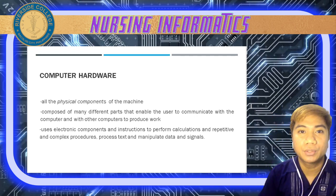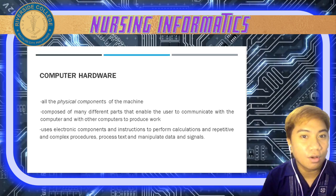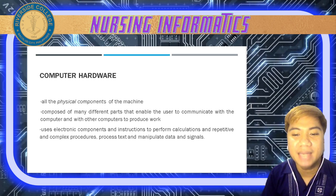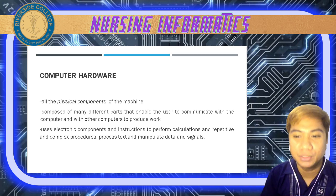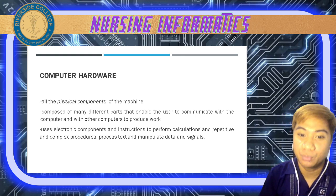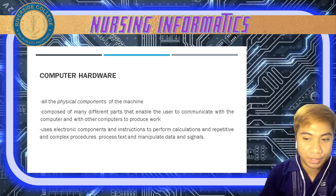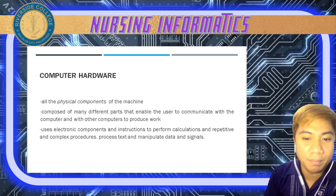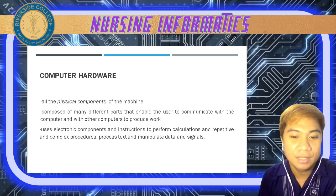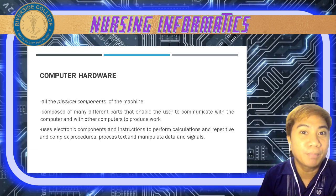When we talk about computer hardware, it is the physical components of a specific machine. It is composed of many different parts that enable the user to communicate with the computer and with other computers to produce work. It uses electronic components and instructions to perform calculations and repetitive and complex procedures, process text, and manipulate data and signals.